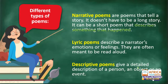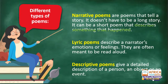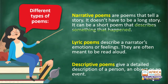And then we have descriptive poems — they give a detailed description of a person, an object, or an event. If I said you have to write a poem about your cat, that will be a descriptive poem. You will describe the fluffy hair, the cute little mouth, eyes, whiskers — every detail — and put in the rhyme and rhythm. So our three types are: narrative, lyric, and descriptive.